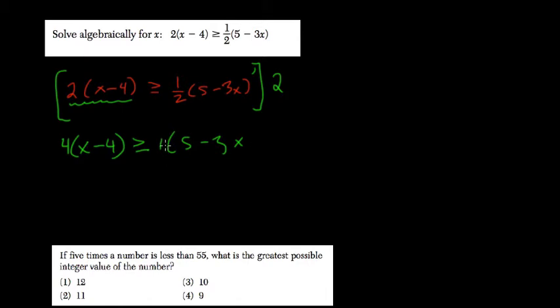Now, you don't need to distribute the 1, so let me clear this off. 1 is the identity and does not need to be distributed. But we should distribute this 4, get 4x minus 16, greater than or equal to 5 minus 3x.